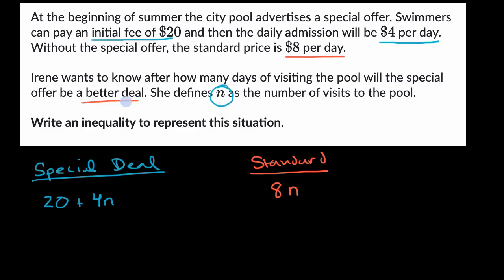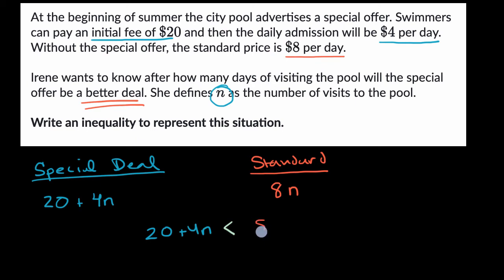A better deal means that the special offer needs to cost less. So one way to think about it is: 20 plus 4N, where N is the number of days, needs to cost less than the standard situation. So 20 plus 4N needs to be less than 8N. And we're done.